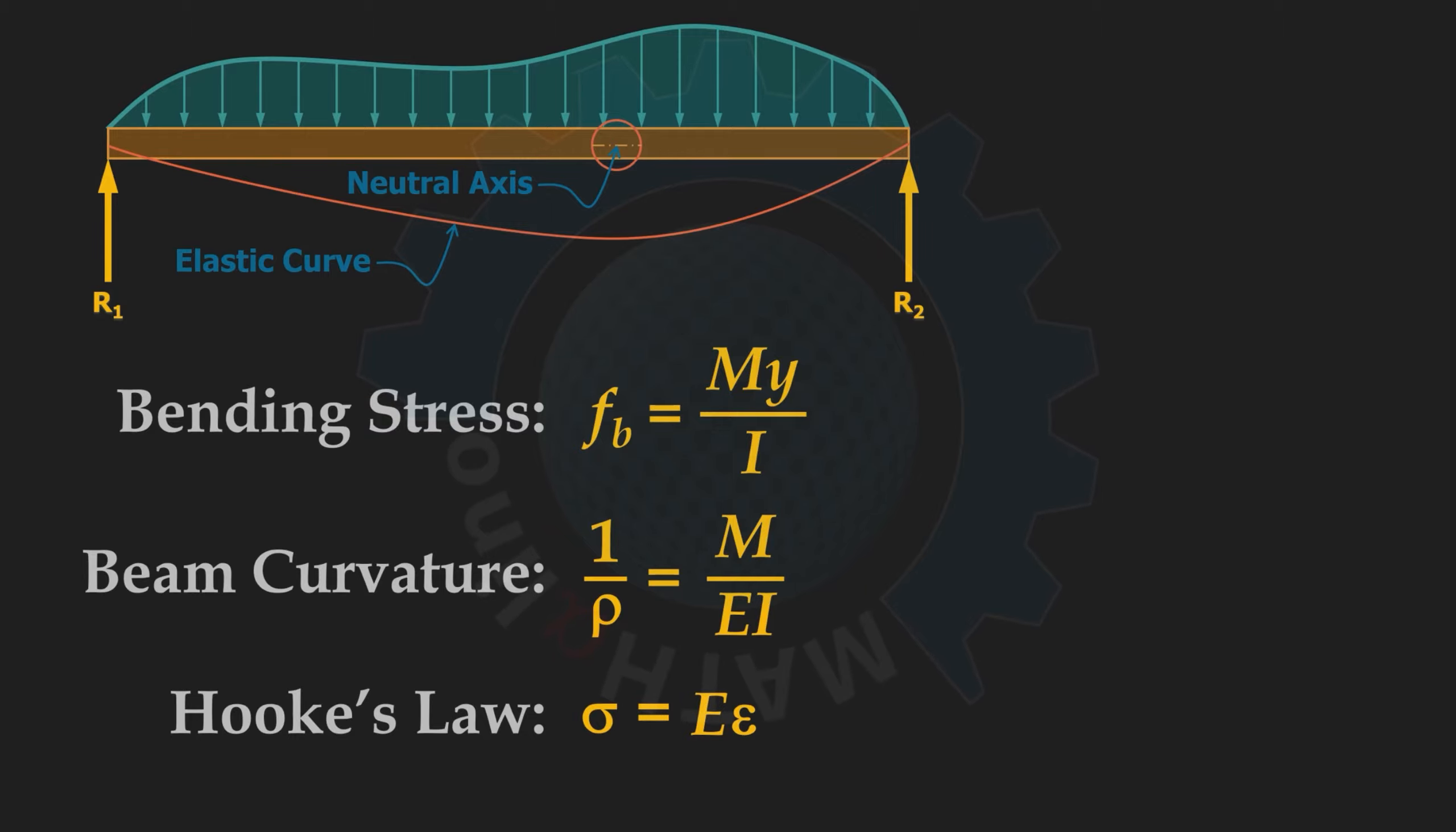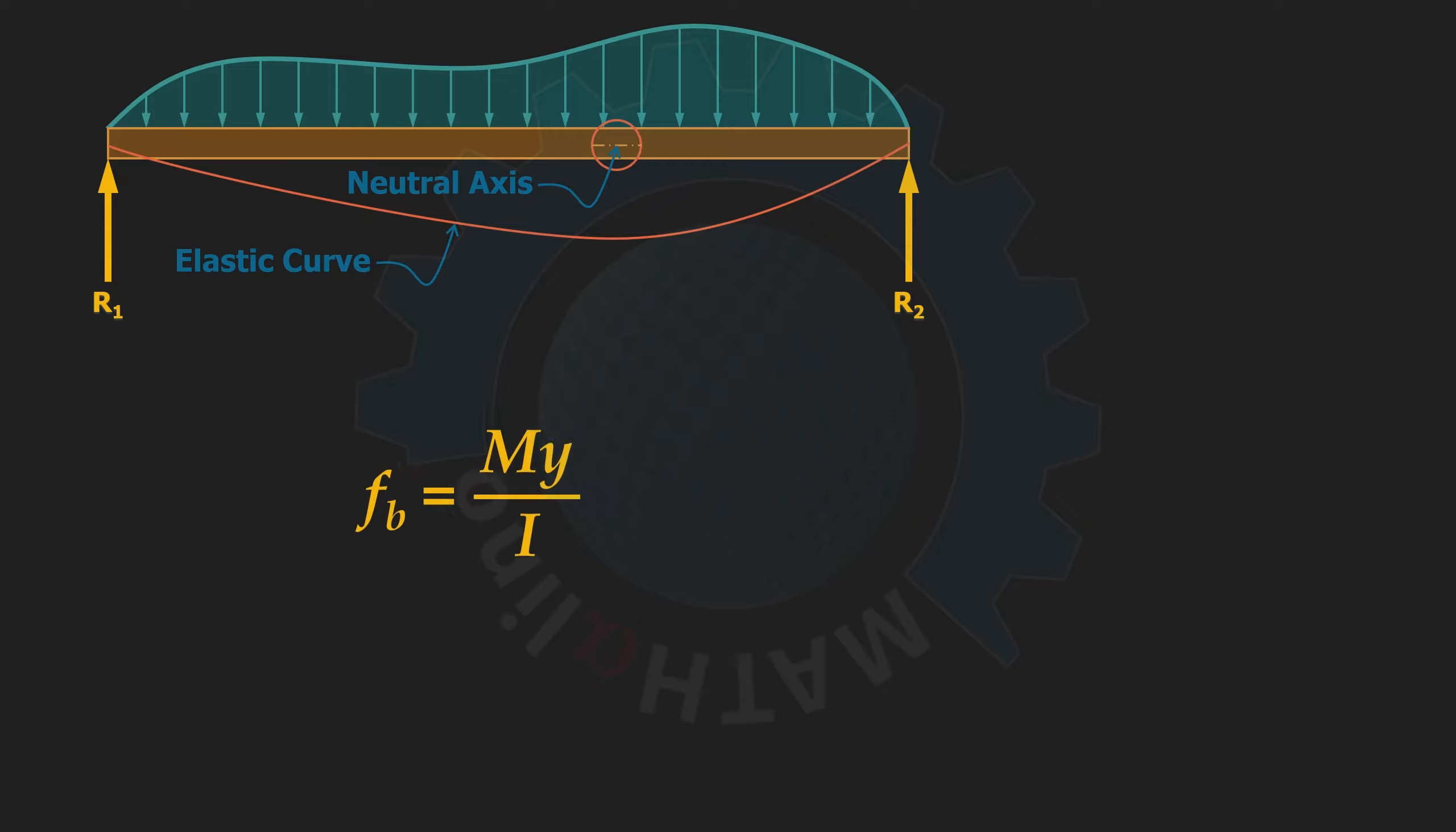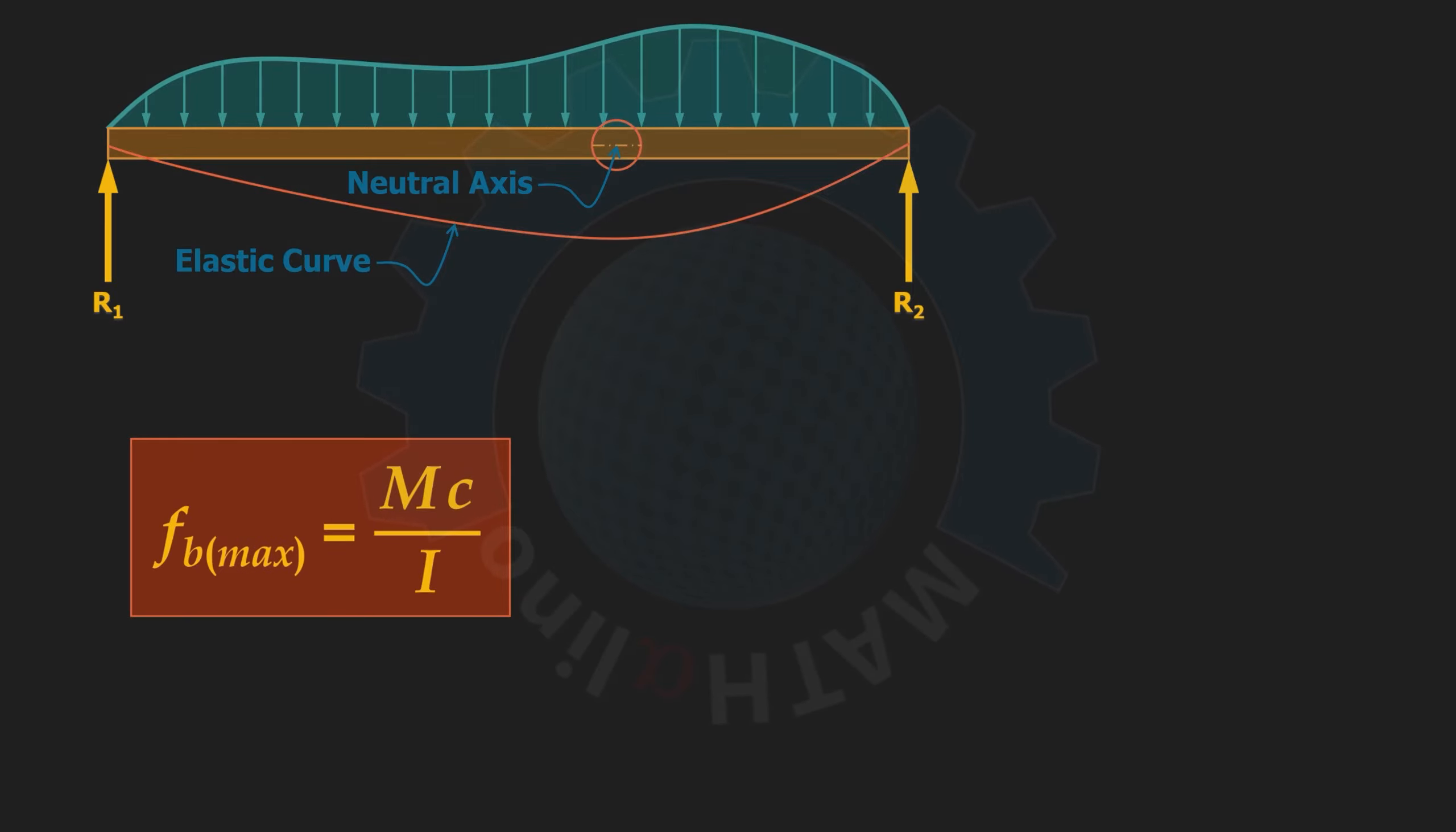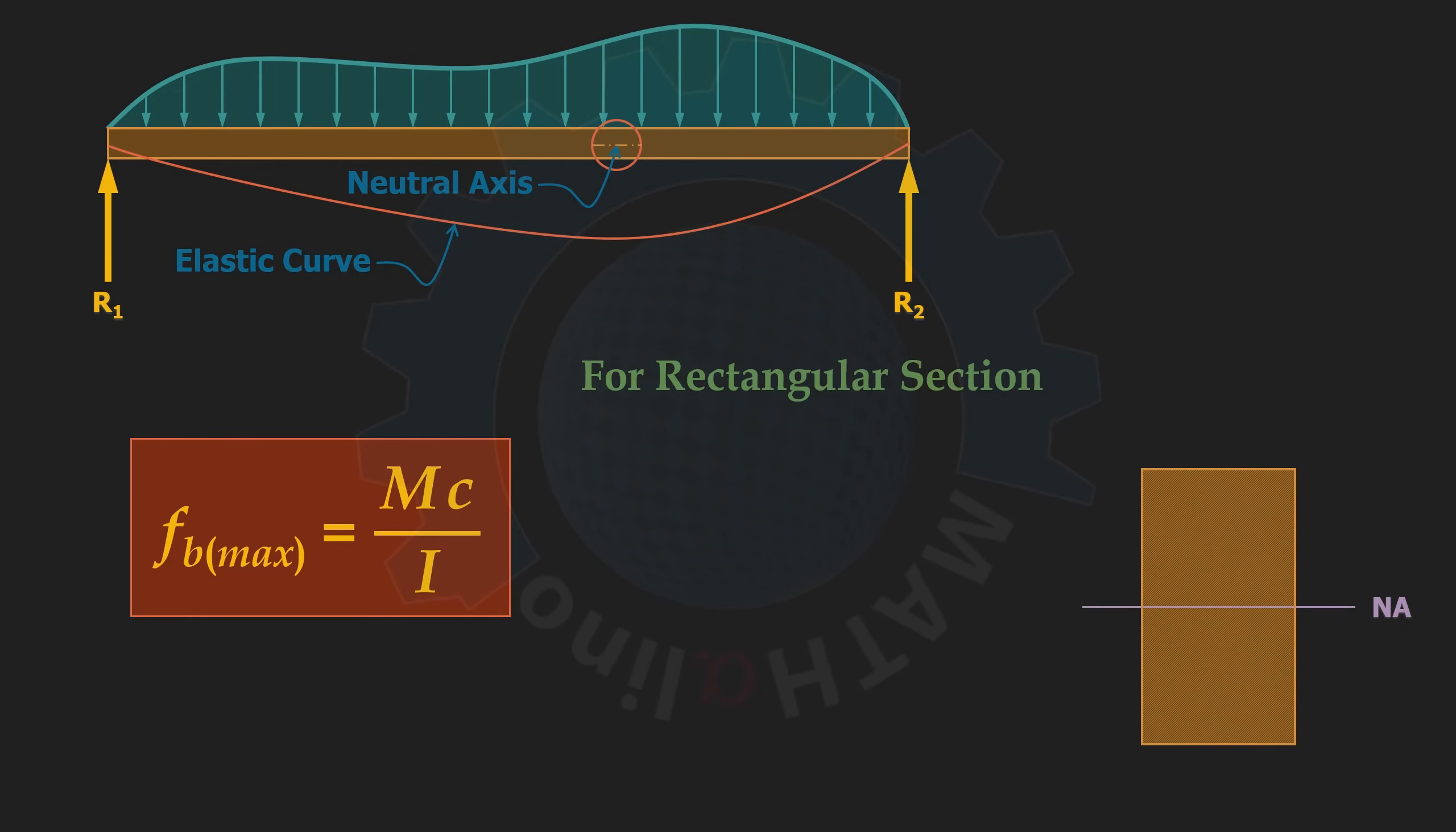Let us now focus on fb equals My over I, and that at a particular section, it is maximum when y equals c. It is also at our advantage to consider the flexure formula for rectangular section. Say we have a rectangle of width b and depth d. From the neutral axis, the farthest fiber is d over 2. The formula will become fb max equals M times d over 2 all over bd cubed all over 12.